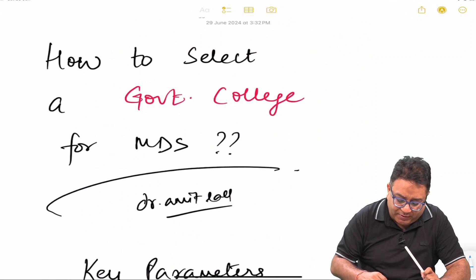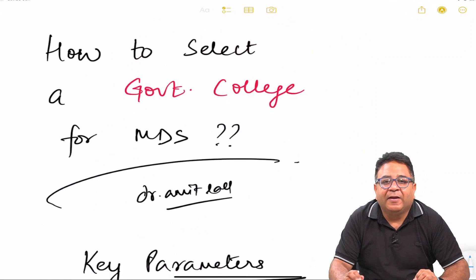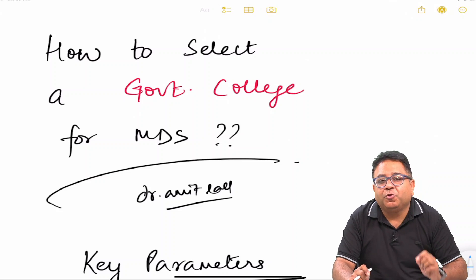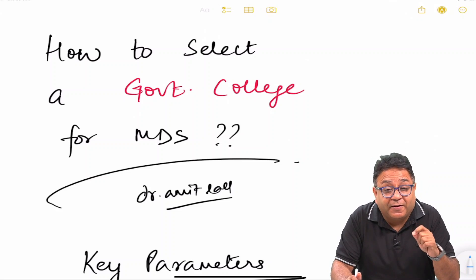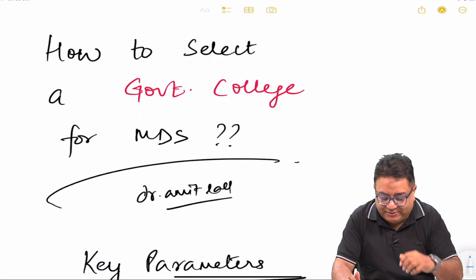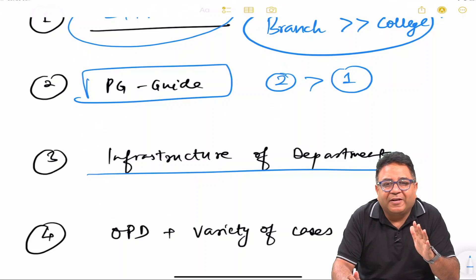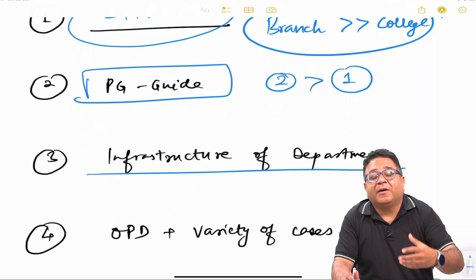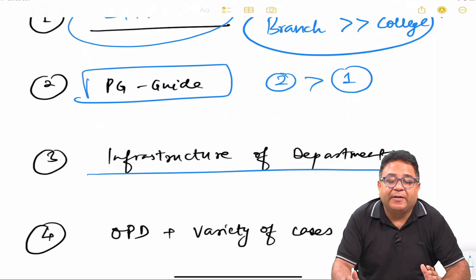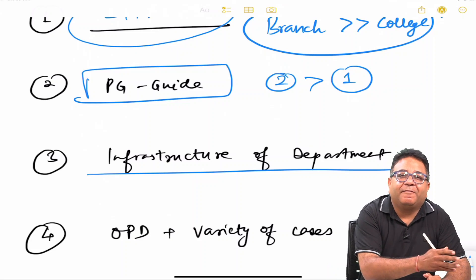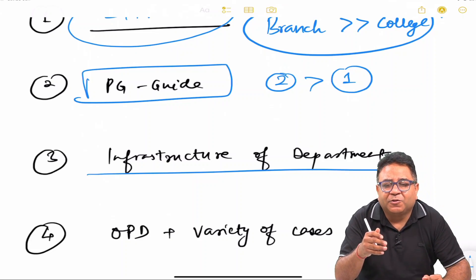But yes, one thing I want to tell you regarding GDCs is the bottom line: no college is going to be perfect. Every college there will be some or the other thing missing, but that's not a very major miss out. That part of your MDS can always be learned once you complete your degree and you progressively learn new things which were not covered in those three years.